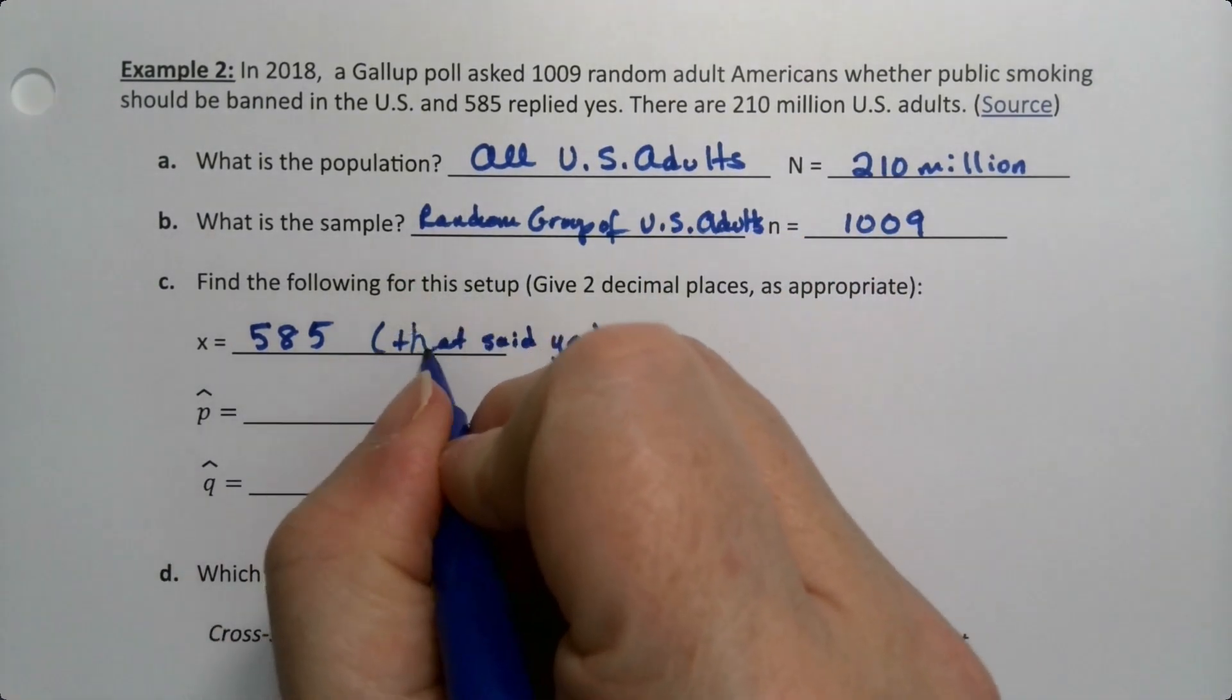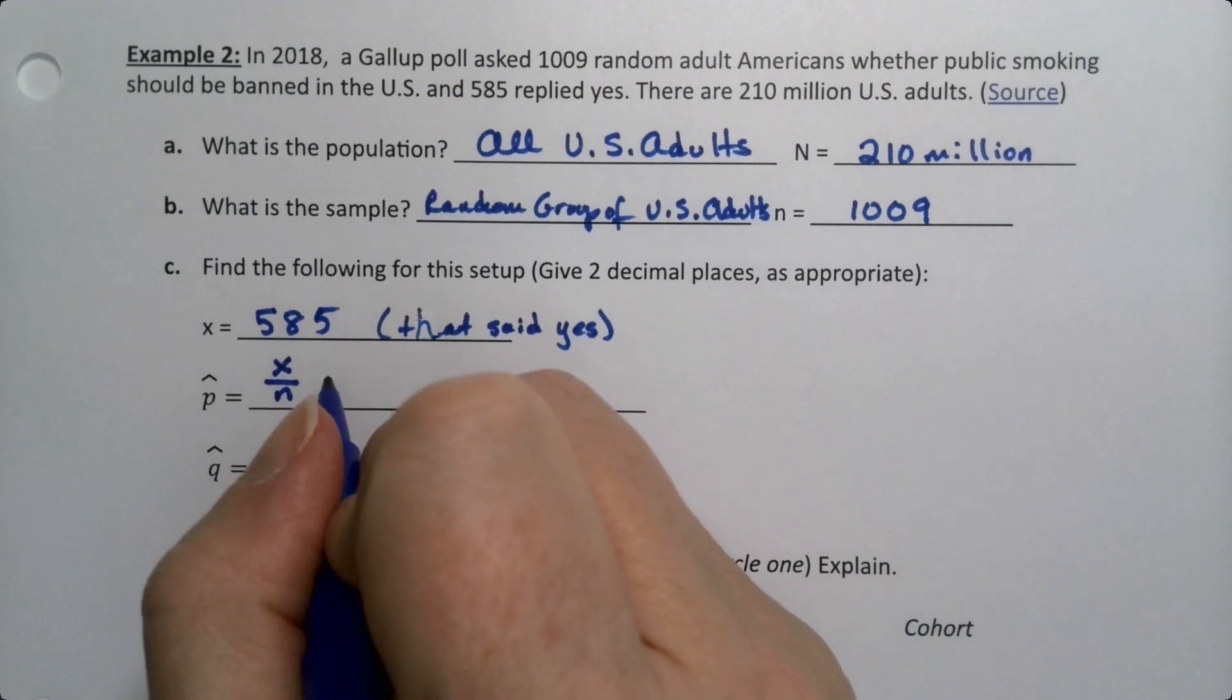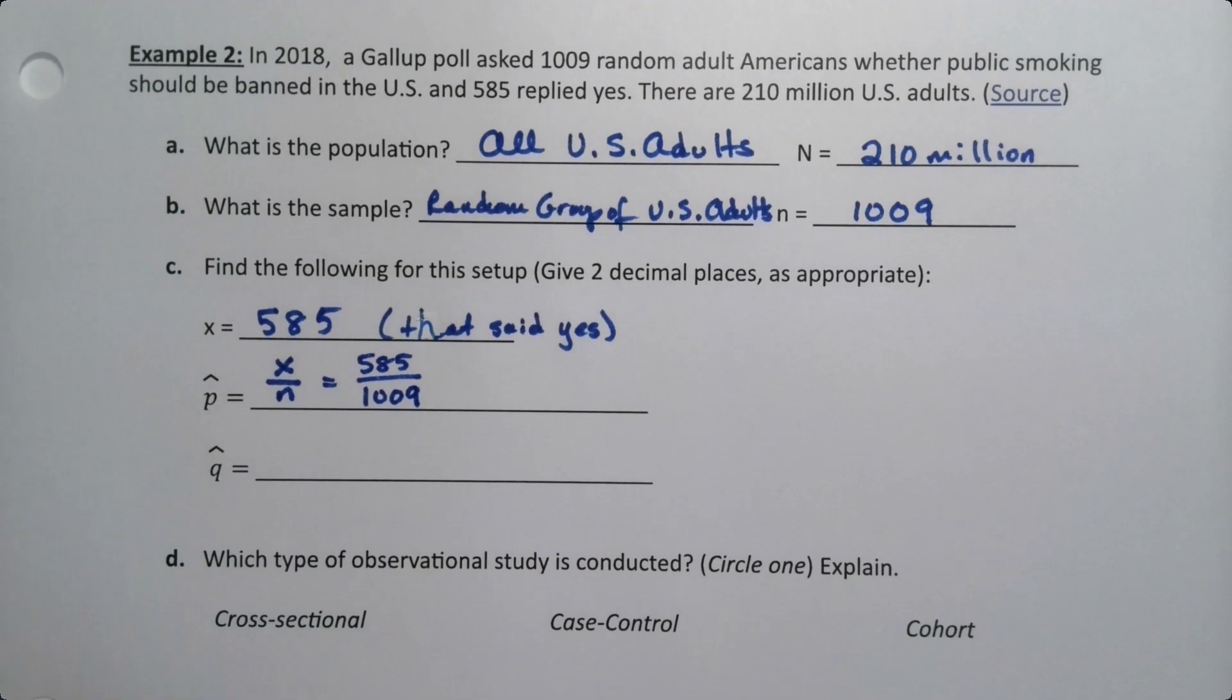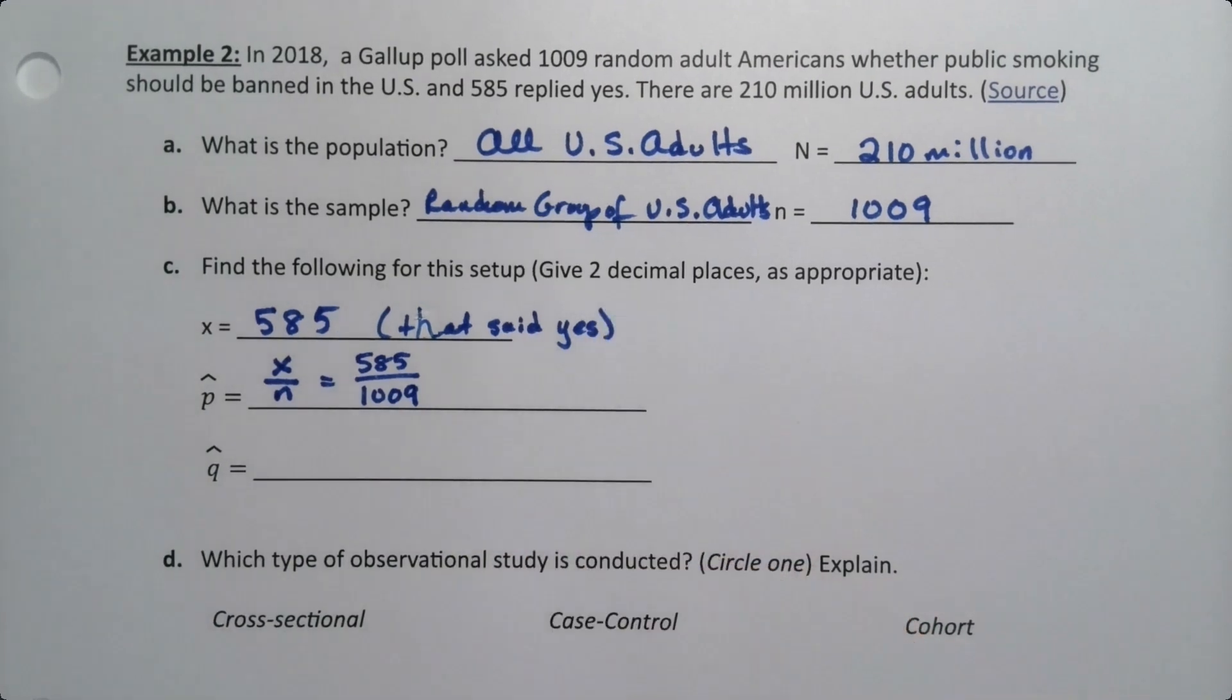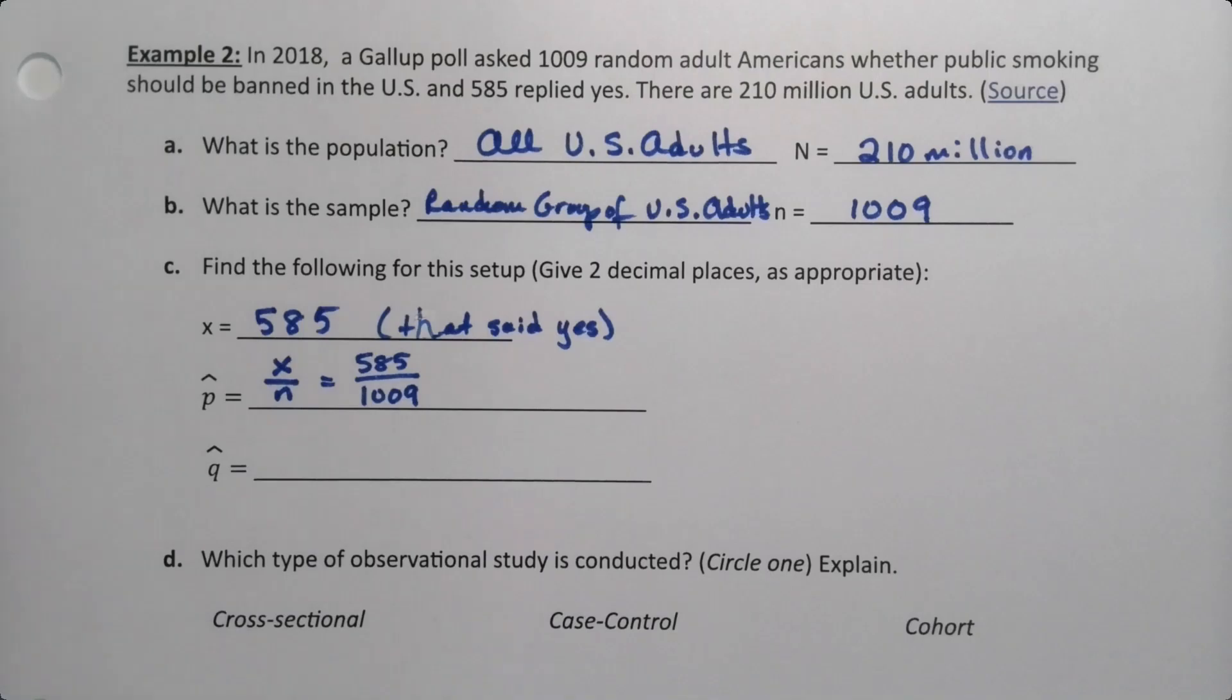p̂ is X over n. We learned that at the beginning of this section. So p̂ would be 585 divided by 1,009, and it says to give two decimal places. So let's go and grab decimals for this. p̂ is 585 over 1,009, and we can get that it's 0.58.